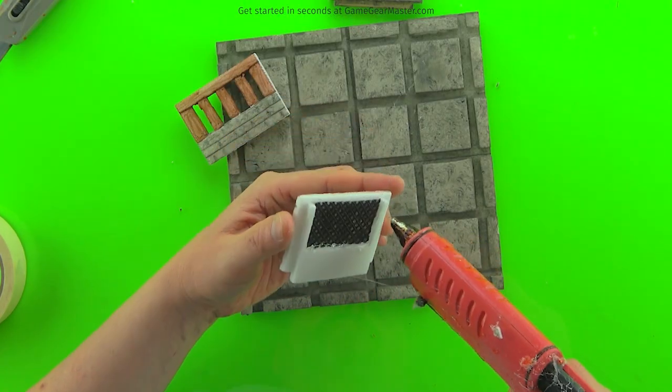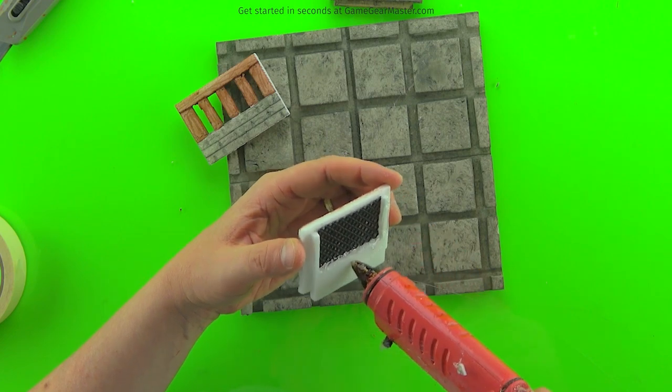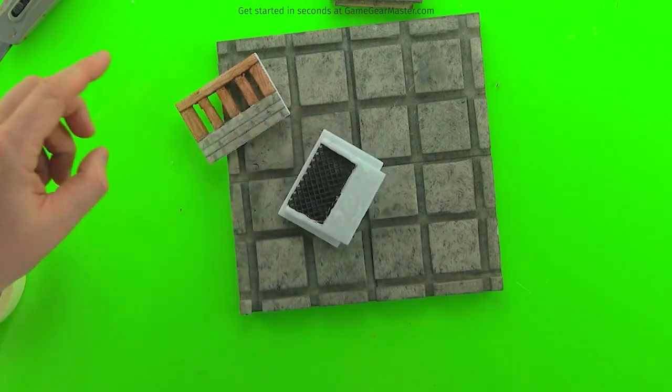And I usually just put a little dab of hot glue on the bottom there to hold it in place. You don't need a whole lot for that window to stay in there. And then we just glue on the other side of the wall.